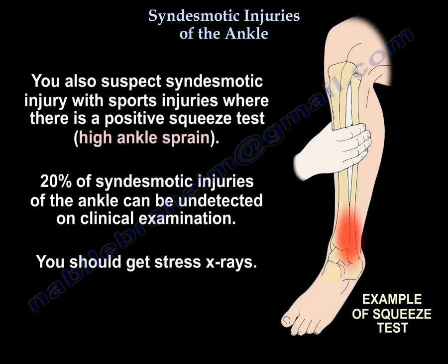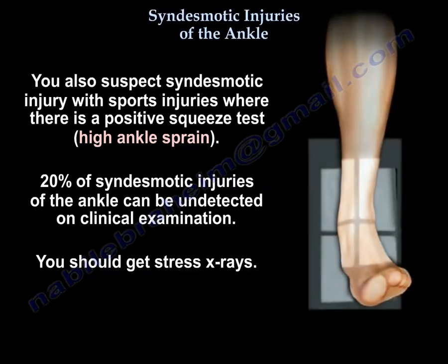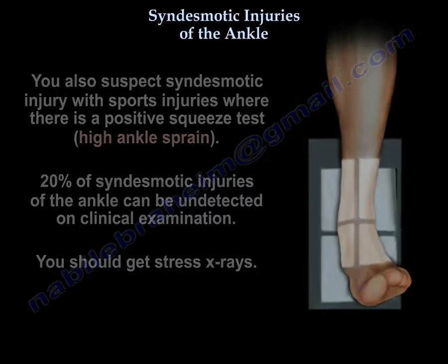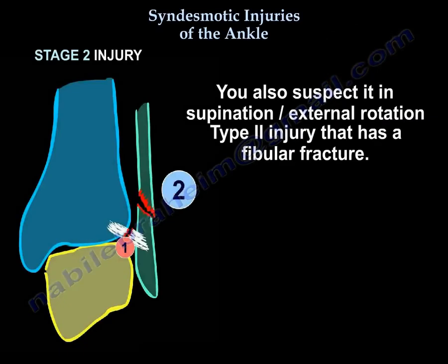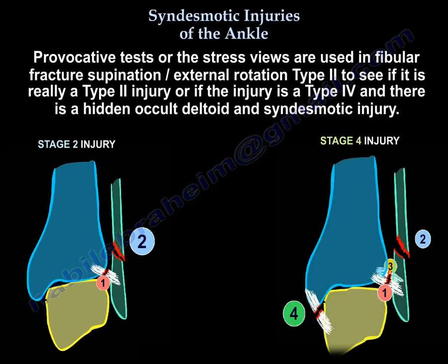You should also suspect syndesmotic injury in a sports injury where there is a positive squeeze test. 20% of syndesmotic injuries of the ankle can be undetected on clinical examination — you will get stress x-rays. You also suspect it in supination external rotation type 2 that has a fibular fracture. Provocative tests or stress views are used in supination external rotation type 2 to see if it is really a type 2 injury or if the injury is a type 4, with a hidden occult deltoid and syndesmotic injury.